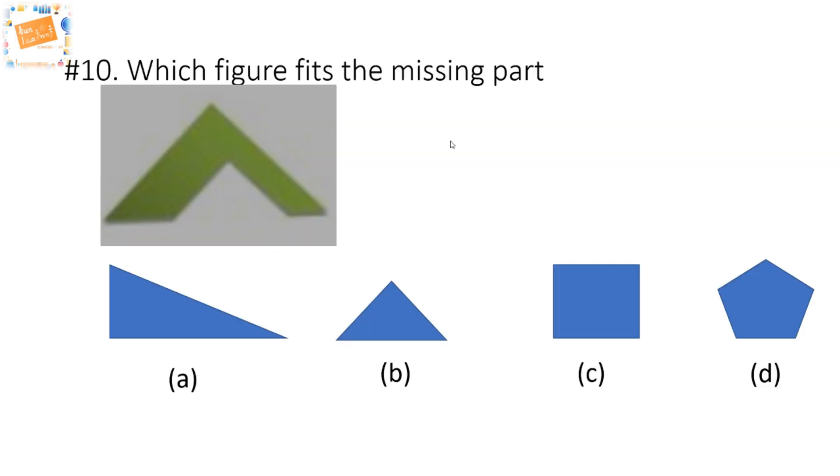Let's look at the next question: which figure fits the missing part? For these questions, an easy way to approach this is draw the figure in the empty space. So as I draw, I get a triangle and this shape matches my option B. So my correct answer is option B.